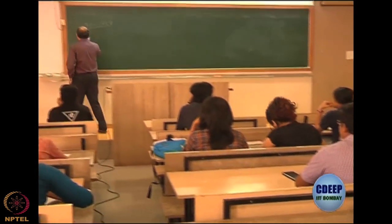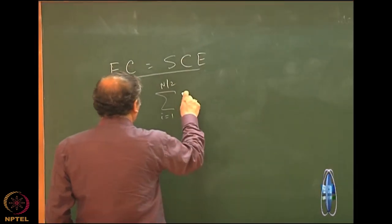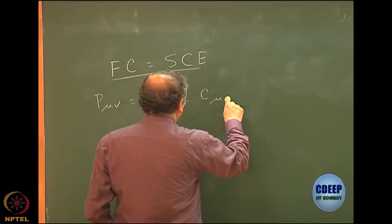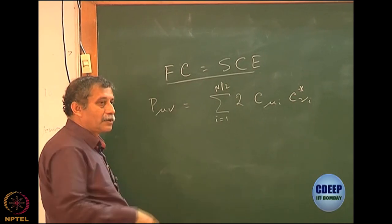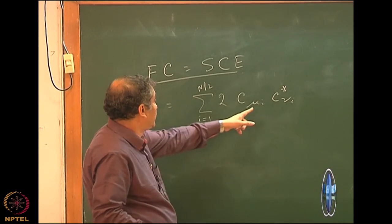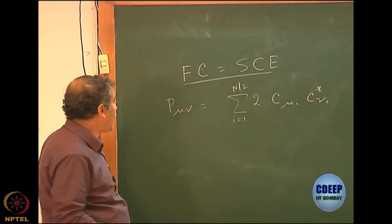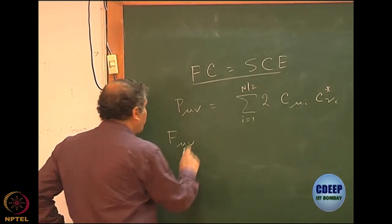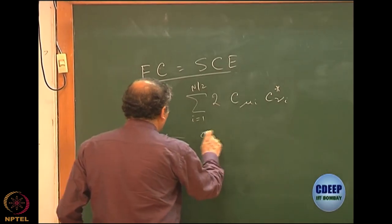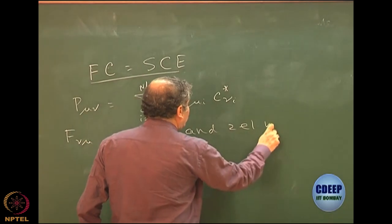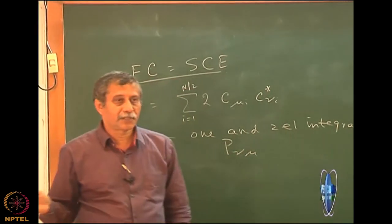I hope you remember this terminology: we define P_μν as a matrix which is a sum over molecular orbitals I equal to N/2 of 2 times C_μI and C_νI star. This was the definition of the charge density bond order matrix where the summation was over the molecular orbitals. The final index — the molecular orbital — does not appear; it is only atomic orbitals. We can write the entire expression of the Fock matrix F_μν in terms of the one- and two-electron integrals and P_μν, the charge density bond order matrices.